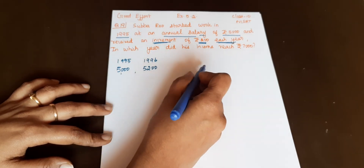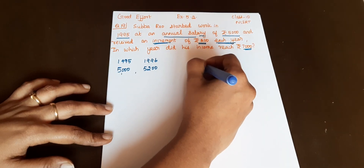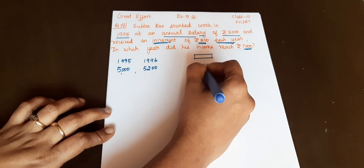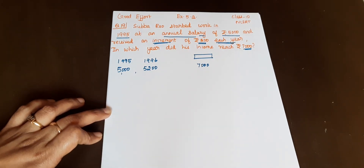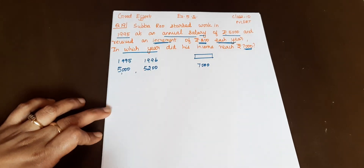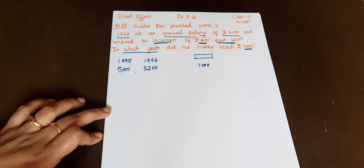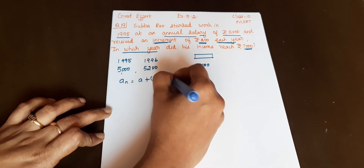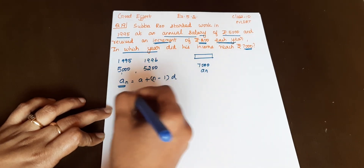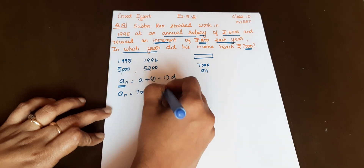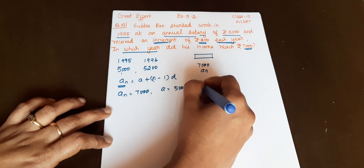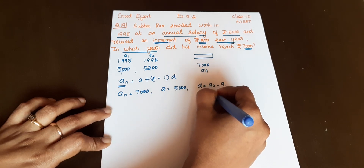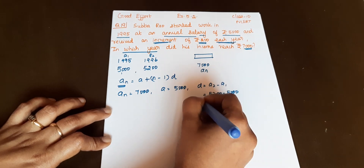So this year the salary increases until it reaches Rs. 7,000. We need to find in which year. AN is equal to 7,000. A is the first term, A equals 5,000. This is A1, this is A2. D is equal to A2 minus A1. A2 was 5,200 minus 5,000, so D equals Rs. 200.